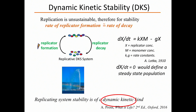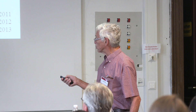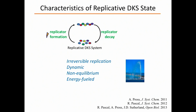If we characterize the dynamic kinetically stable state: it is based on irreversible replication — otherwise you won't get the exponential growth. It's dynamic, and it's non-equilibrium. This is not an equilibrium state — it's a steady state. The proof of that is that it has to be energy-fueled. If you turn off the pump on that fountain, there's no fountain. In the same way, with the replicating system, if you don't have a continual source of energy, the replicating population will just stop. It's an energy-fueled steady state.